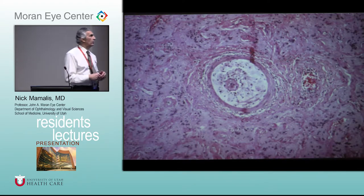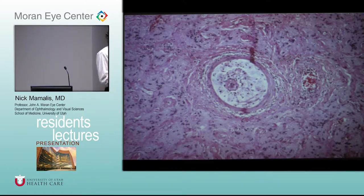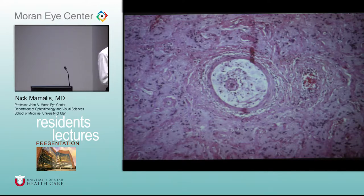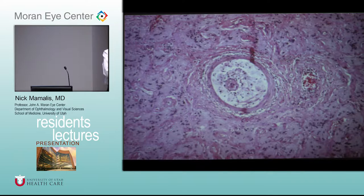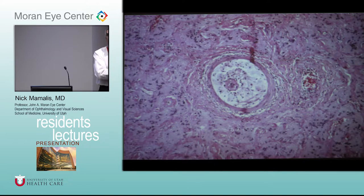What we're showing here — where are we? There's this artery and vein. We're in the optic nerve. Remember: when the central retinal artery comes into the eye it comes through the center of the optic nerve, but the central retinal vein runs right next to it.